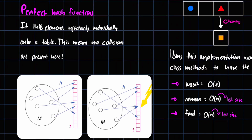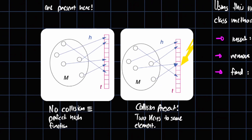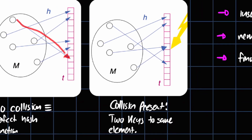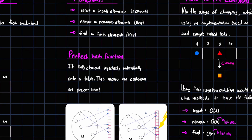A perfect hash function maps elements injectively — individually — onto a table, meaning no collisions are present. Injective means one-to-one: one key maps to one slot, with no two keys pointing to the same slot. Something that is not injective would have a collision — which is why it's not called a perfect hash function.